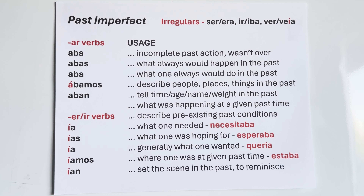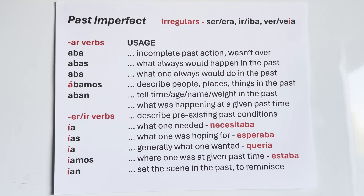We will contrast past preterite and past imperfect and it will become clearer. This is a new concept — the past imperfect. You should be able to conjugate it — it's very simple — and learn the three irregulars ser, ir, and ver. The last usage: to set the scene in the past. It was cold — hacía frío; it was raining — llovía; nobody was there — no estaba nadie; it was dark out — estaba oscuro. All these fall into the category of an incomplete past action — whatever you're referring to was not over at the moment you refer to it.